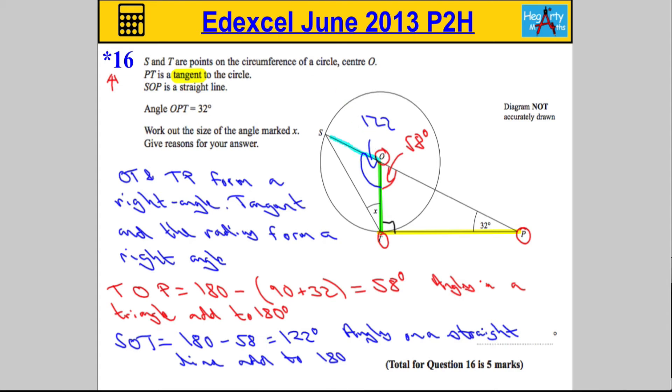So this triangle here which I'll highlight in blue - this, this, and this. Unfortunate that we can't highlight over that green, but hopefully you get the idea. So we're talking about that triangle there is actually an isosceles triangle. Now how do I know that? OT is a radius so it has a particular length, but also OS is a radius.